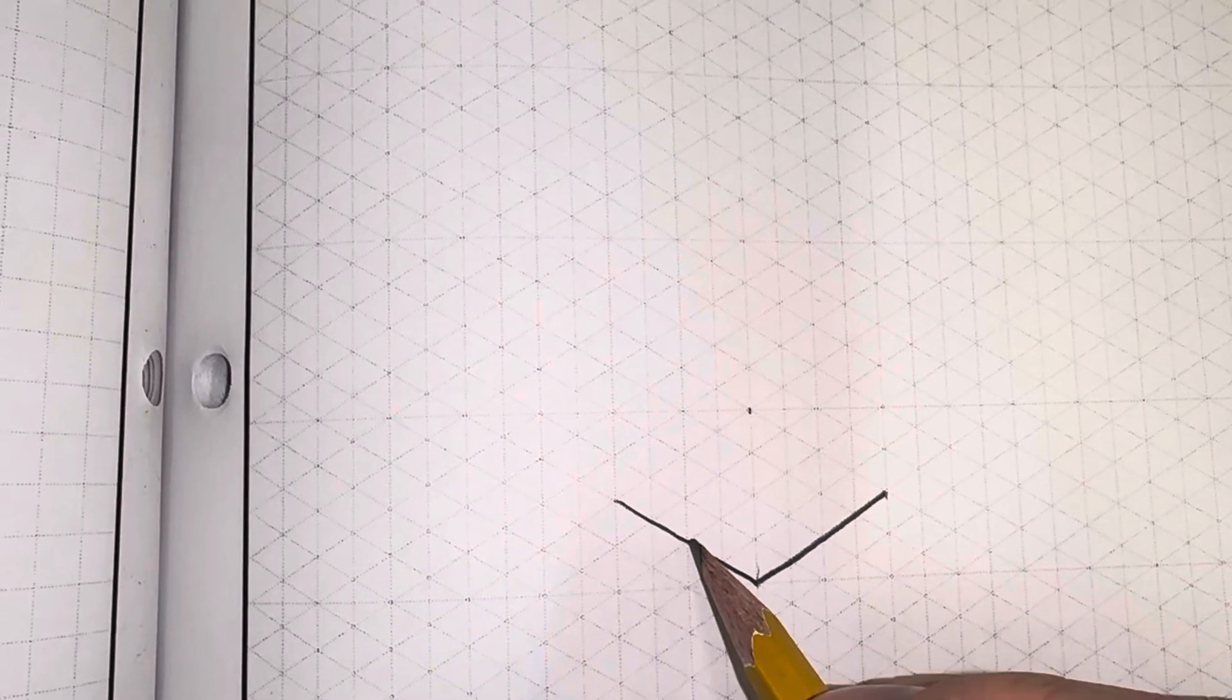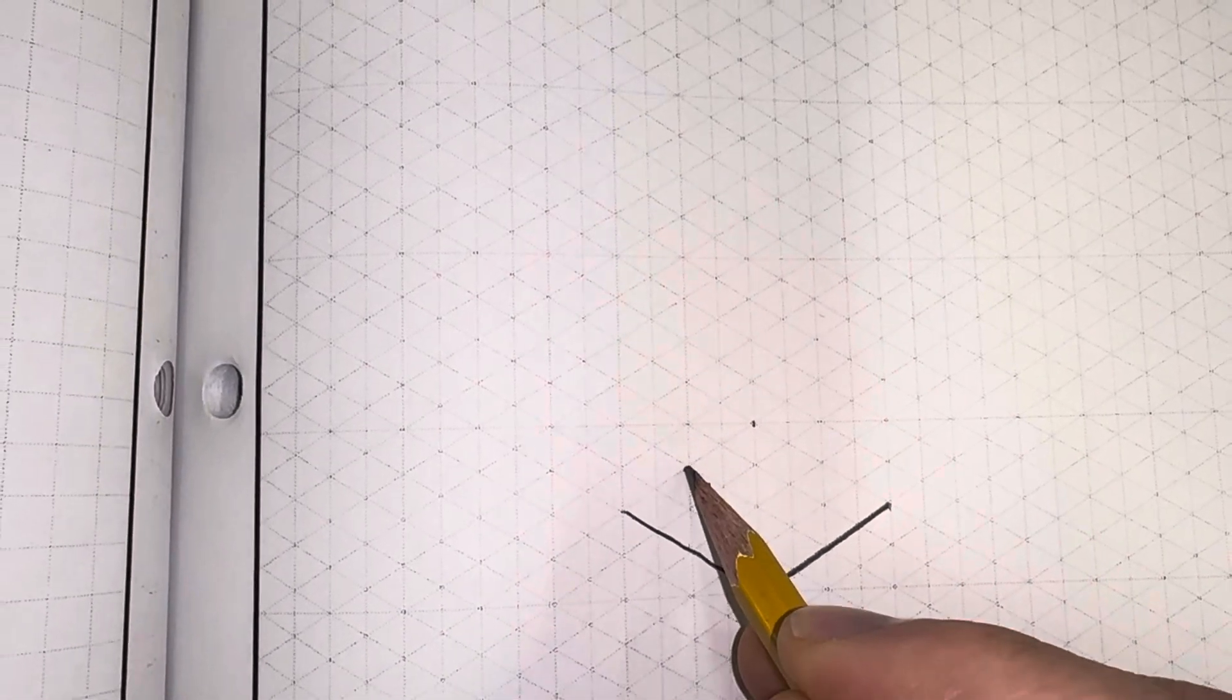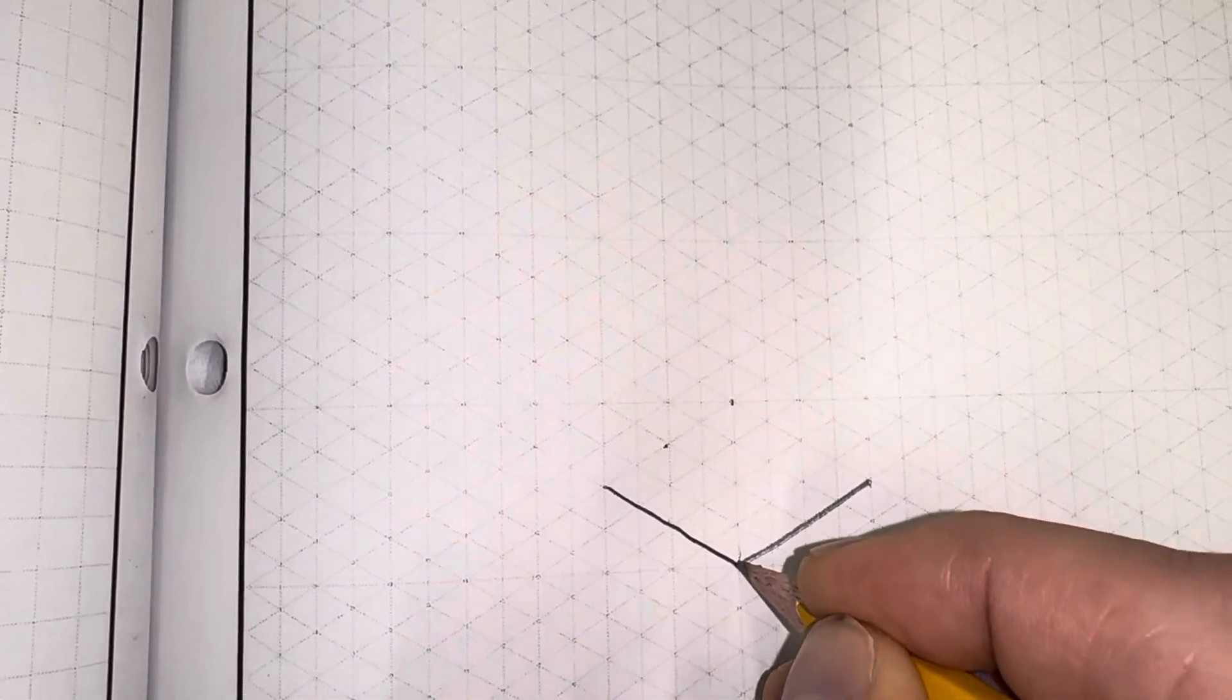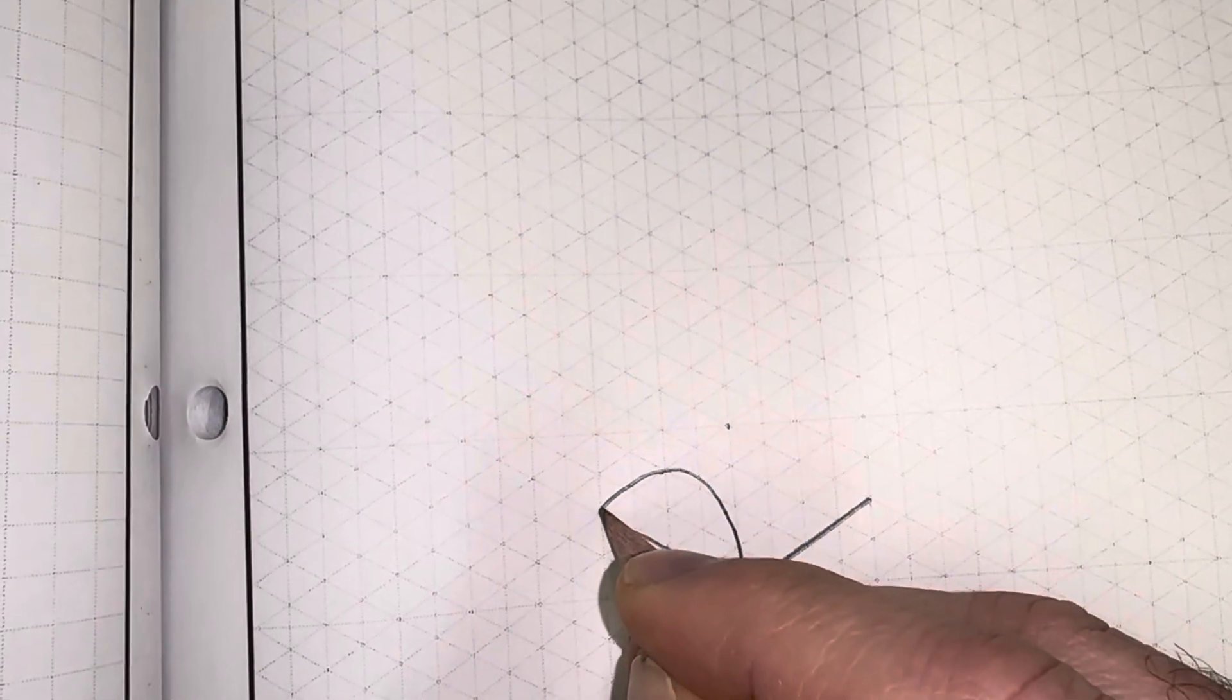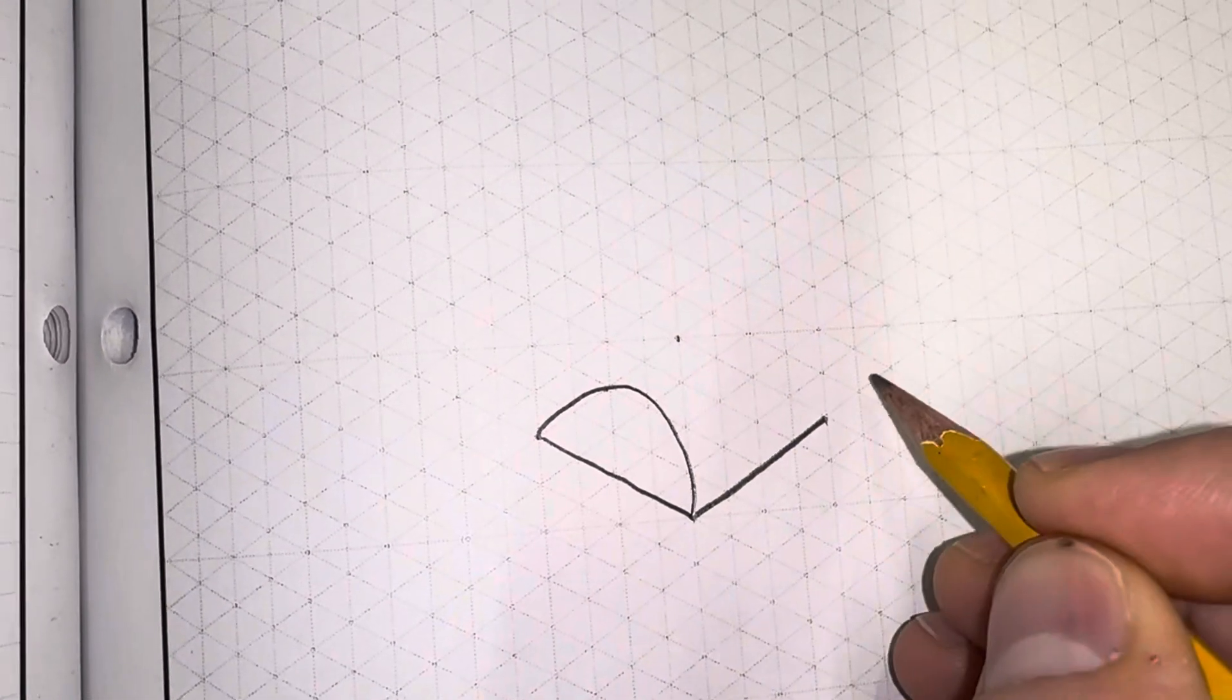From here, I'm going to find the middle. I'm going to go two up and mark my point. What I'm going to do is carry that curve through that point, and it's going to be a little steeper on the back side.